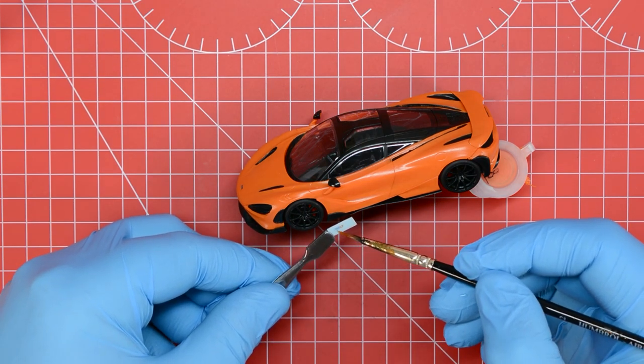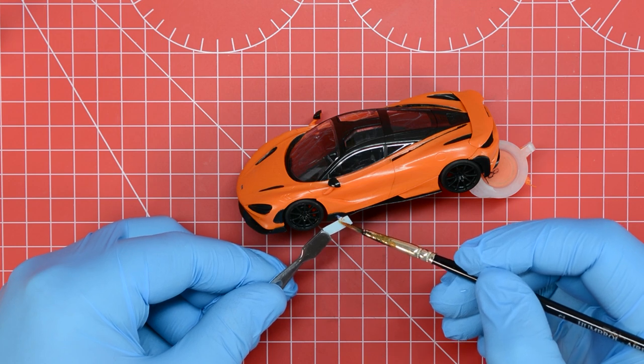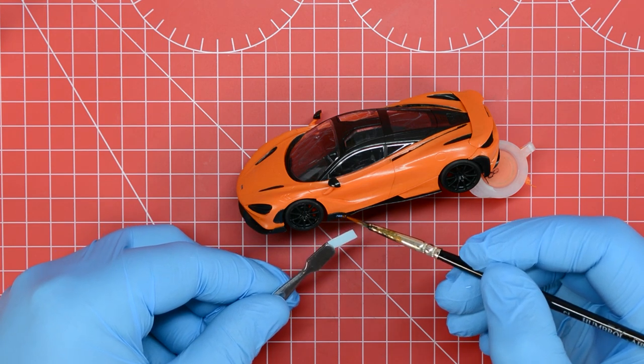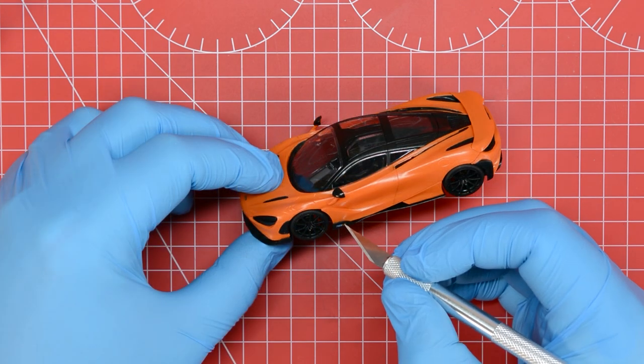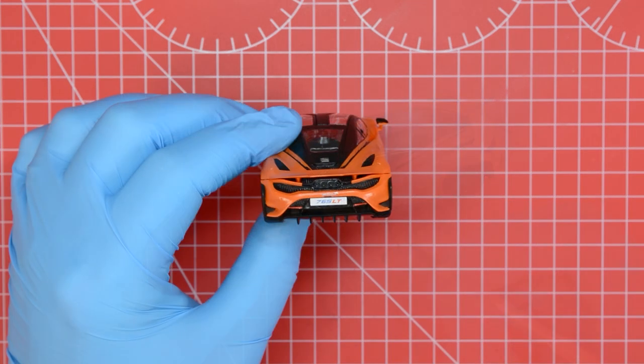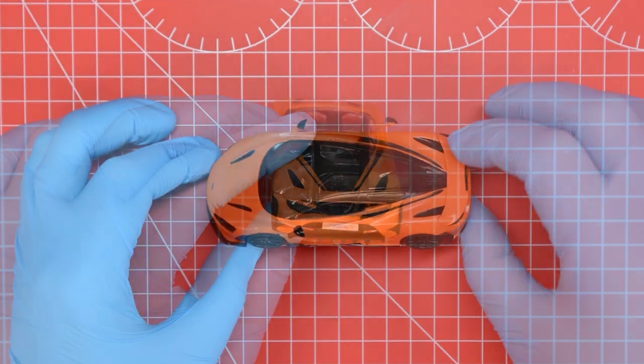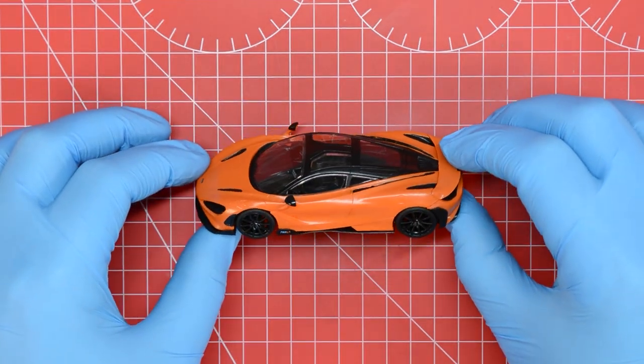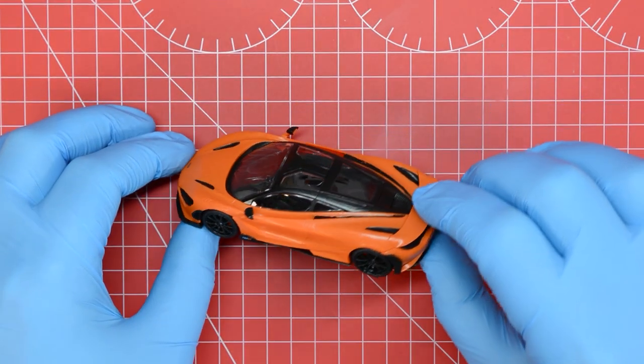There are a few markings to add on this model so we're not going to show each one in the video but the process is exactly the same, and once we've finished adding them all and they've all been allowed to dry that completes the build of the McLaren 765LT starter set from Airfix and we can go ahead and pop this one on the shelf.